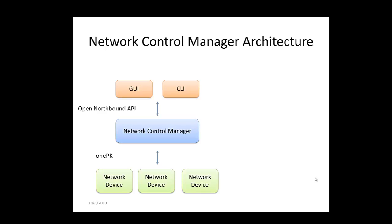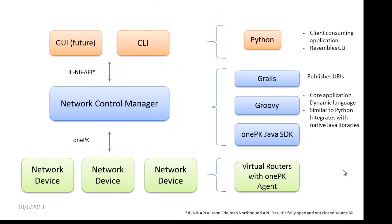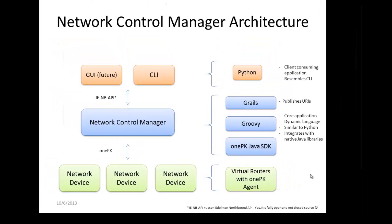Going above the controller, communicating with control programs or consuming applications would be an open northbound API. This is primarily built and tested with virtual routers running the 1PK agent, all running on my host machine. The Network Control Manager application itself, which can be thought of as an SDN controller, is built in the GRAILS framework. GRAILS makes it very easy to expose northbound APIs to consuming applications. The application code is written in Groovy, a dynamic programming language based on Java, with the huge benefit of being able to leverage the native Java 1PK libraries.